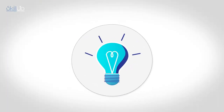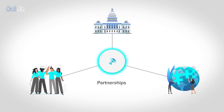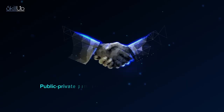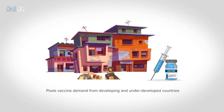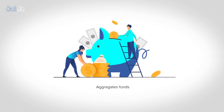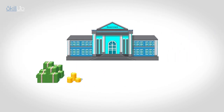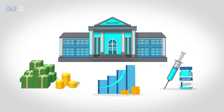The most potent form of social innovation often arises when these actors form partnerships. Take the example of Gavi, the Vaccine Alliance — a public-private partnership that works with an alliance of stakeholders. Gavi pulls vaccine demand from developing and underdeveloped countries, aggregates funds, and works with manufacturers to reduce the cost of vaccines. The participating governments pay a share of the vaccine's cost, and this share increases gradually over the years.